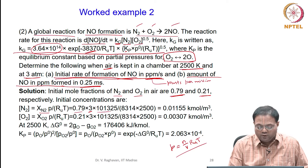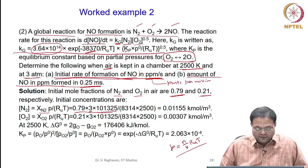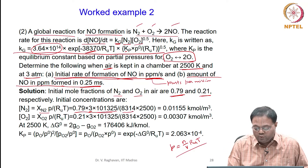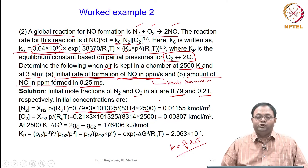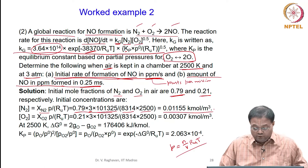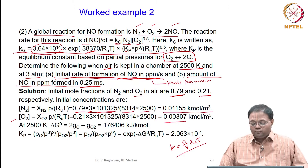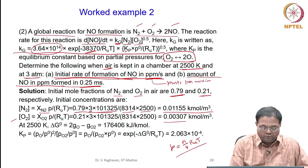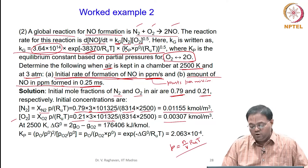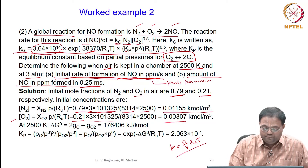Similarly, for oxygen with mole fraction 0.21 and pressure 3 × 101,325, the concentration [O₂] equals 0.00307 kmol/m³. Now we need the value of Kg. In the rate equation d[NO]/dt = Kg × [N₂] × [O₂]⁰·⁵, the initial concentrations are required for the initial rate.